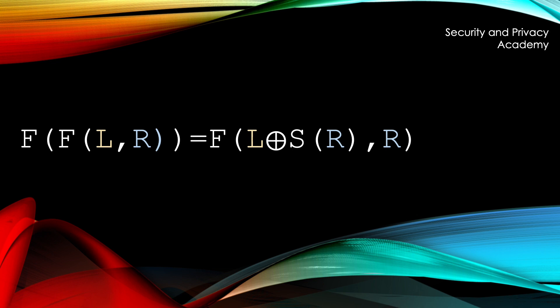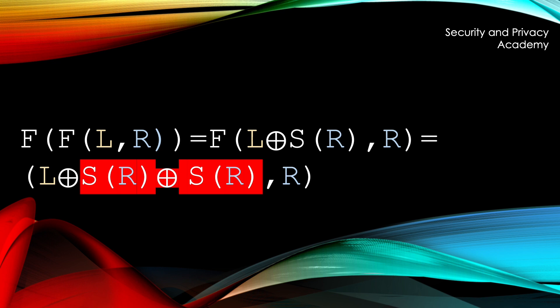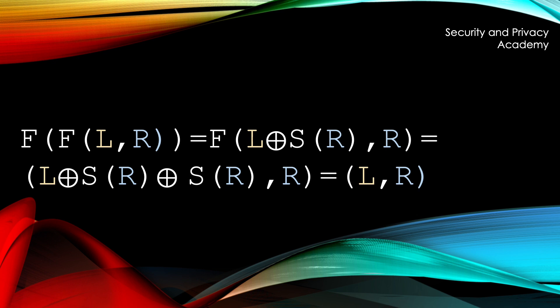Applying the Feistel network again results in this. As you can see already, the function S is XORed twice, which means that it eliminates itself. This, in turn, means that only L and R remain, which is the original value we encrypted initially.